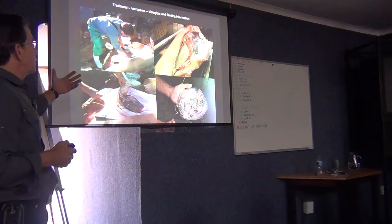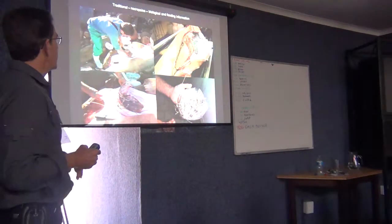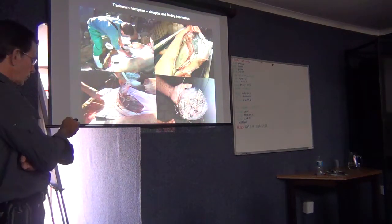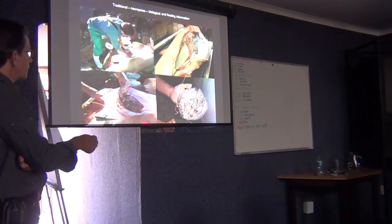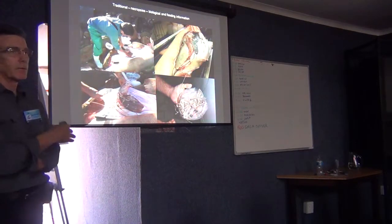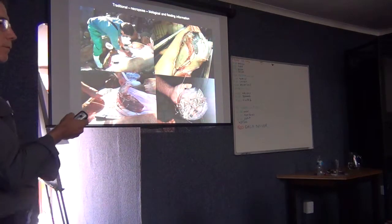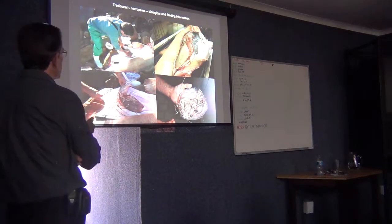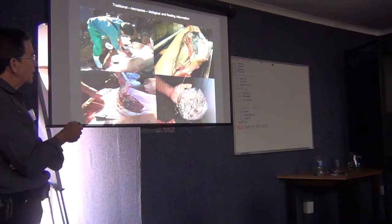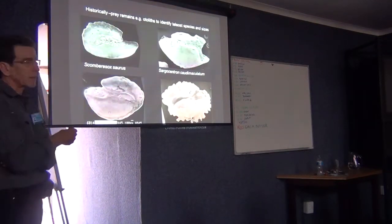One thing to remember is the traditional way of finding out what was going on inside animals, such as sharks, was to actually open them up once they'd been caught and killed, pulling out stomach contents and finding hooks and other things. You can also find out various aspects of reproduction, so there's a lot to be said for necropsies — by no means are they outdated; they are complementary to these other techniques and give you baseline information.